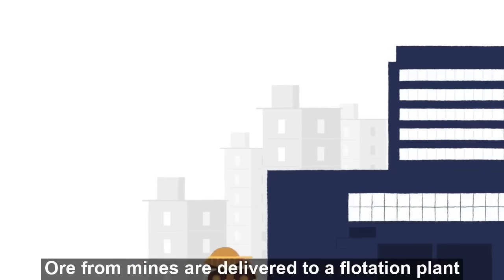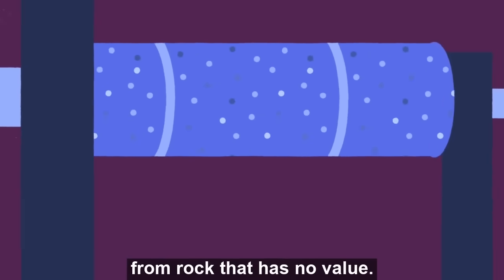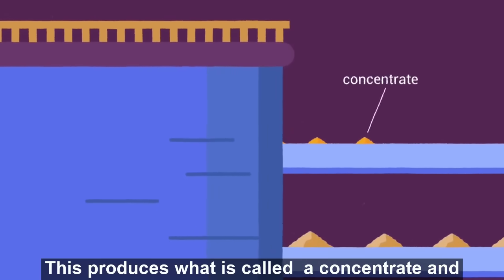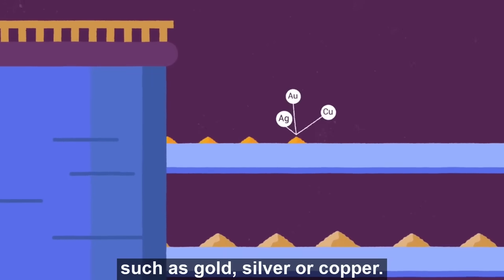Ore from mines are delivered to a flotation plant to separate the valuable rock from rock that has no value. This produces what is called a concentrate and it contains all the value from the rock such as gold, silver, or copper.